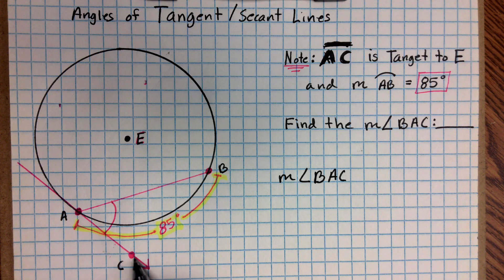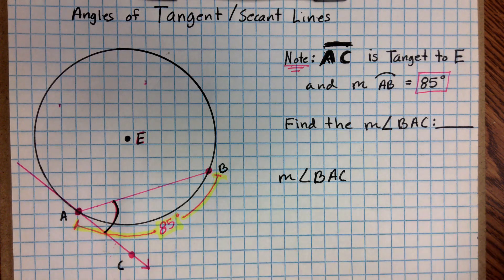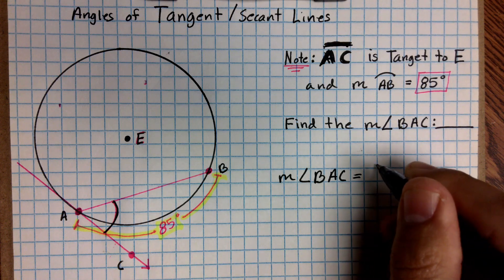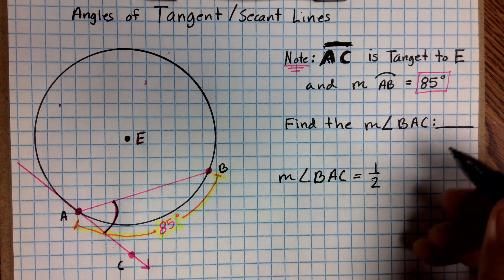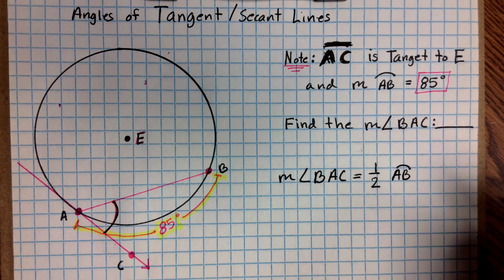So from here to here to here. So this angle right here is going to be equal to one-half the arc AB.